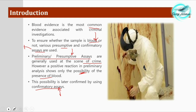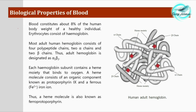Blood constitutes about eight percent of the human body weight of a healthy individual, and most adult human hemoglobin consists of four polypeptide chains. Blood contains a cellular portion as well as an acellular portion. The cellular portion consists of erythrocytes, which are red blood cells; leukocytes, which are white blood cells; and platelets.